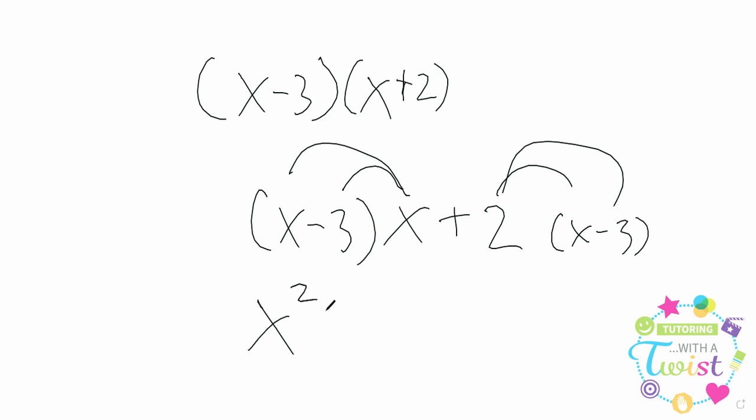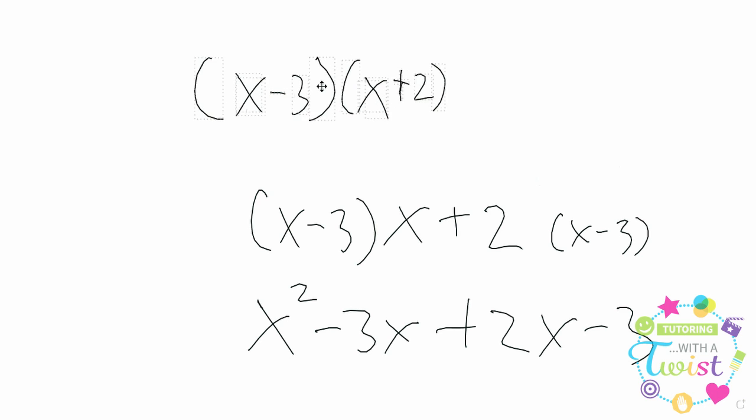x times x is x squared, x times negative 3 is negative 3x, 2 times x, and 2 times negative 3. But let's take a look for a minute and see if we can understand where this comes from.